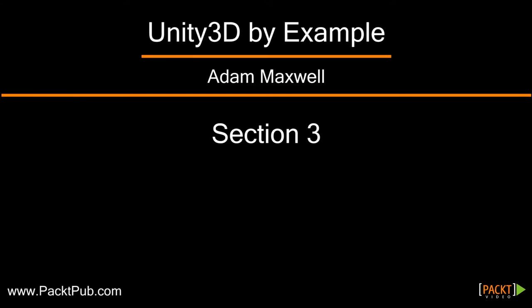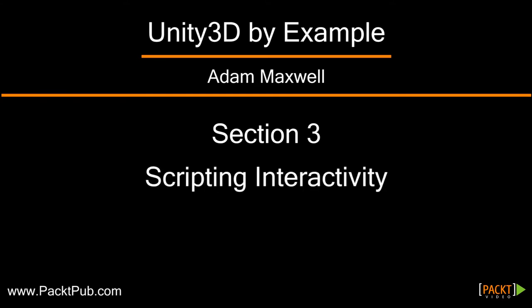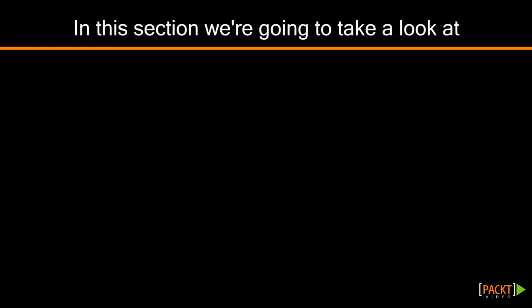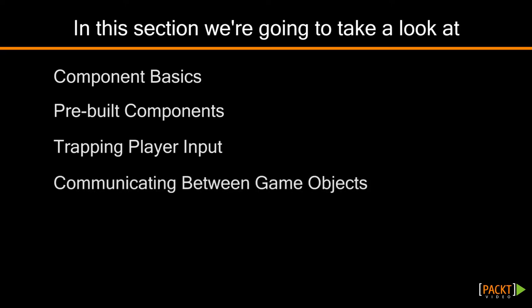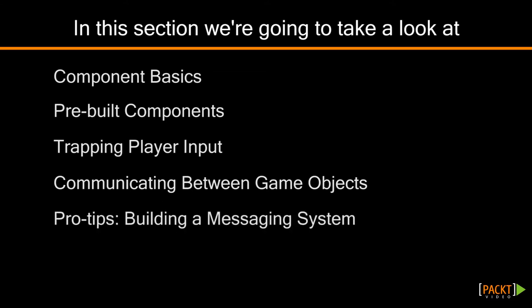Welcome to Section 3 of Unity 3D by Example, Scripting Interactivity. In this section, we're going to take a look at component basics, what the basic structure is of a component, some useful pre-built components that you can use immediately with very little scripting, how to trap player input to respond to interactivity. We'll also discuss how to communicate between game objects — for example, how to get your player to communicate with an NPC. And finally, in the Pro Tips segment, we'll discuss building a messaging system, which is a useful way to communicate between objects in the background. Alright, here we go!